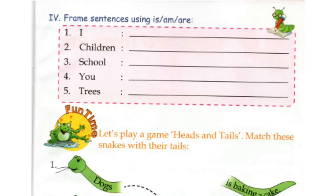Now let's try to do question number four: form sentences using Is, Am, Are. Number one: I. Children, we always use I with Am. So we can write: I am six years old.